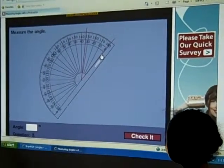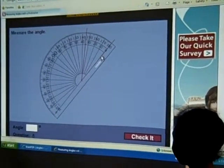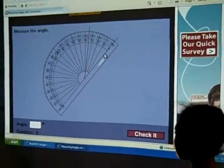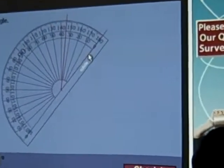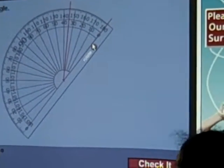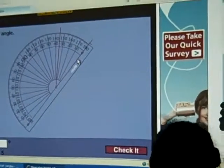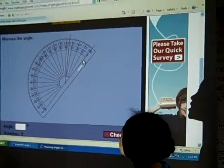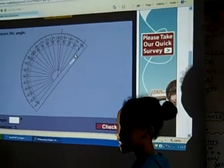Keep going. Keep going this way. Remember, we line up one of the rays with a zero and then you follow the other ray out. Are you going to use the top scale or the bottom scale? Bottom. Okay. And tell me why. Because the acute angle is less than 90. Perfect. Perfect.